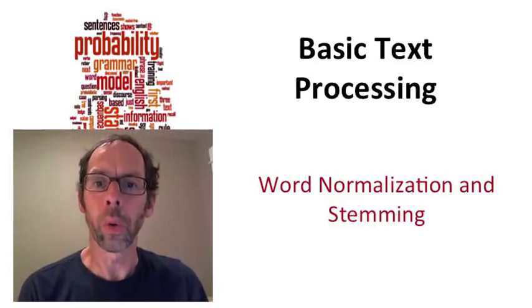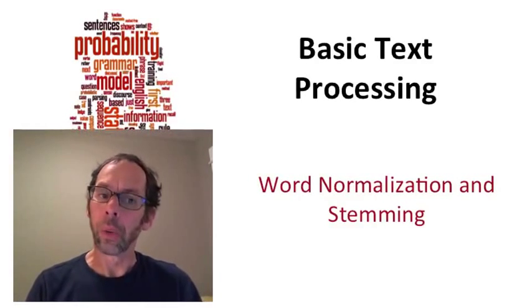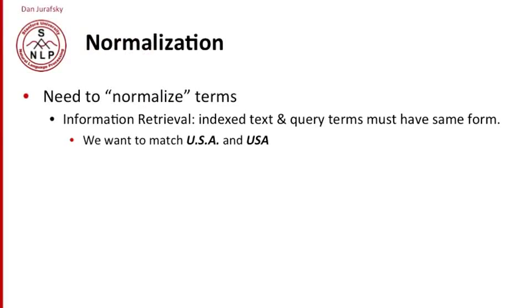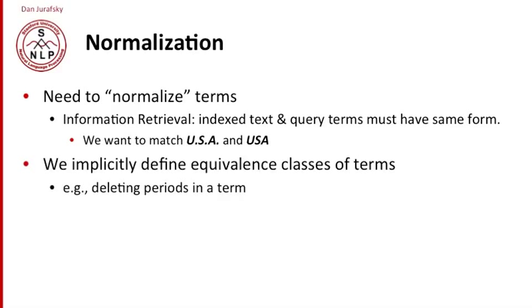Once we've segmented out words or tokenized them, we need to normalize them and stem them. Normalizing means different things. For information retrieval, for example, we require that the index text and the query terms have to have the same form. So we want to match U.S.A. to USA if somebody asks a query with one of them and the answer has the other — we want them to match. So it's like implicitly defining some kind of equivalence class of terms.